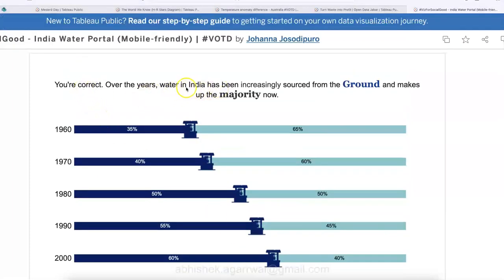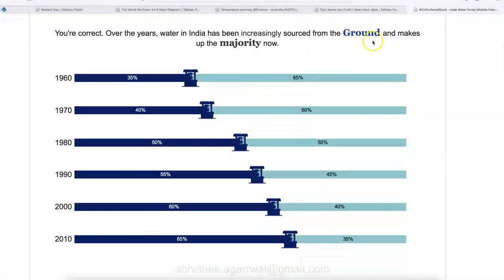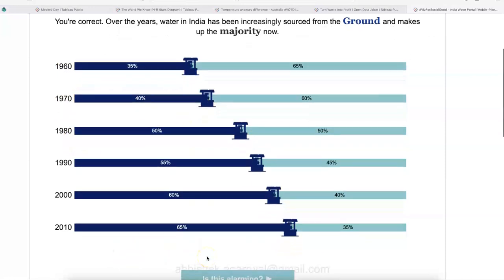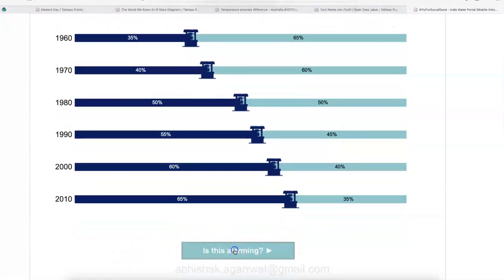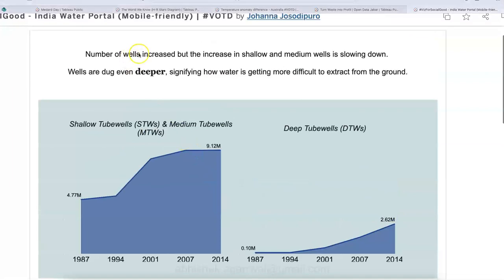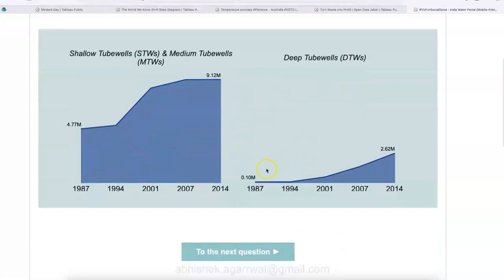Over the years, water in India has been increasingly sourced from ground. And this is what 1960, 1970, 40%, 1980, 50%. And now in 2010, you have 65%. Is this alarming? Let's go and figure it out. So number of wells increased, but the increase in shallow and medium wells is slowing down. Wells are dug even deeper, signifying how water is getting more difficult to extract from ground.